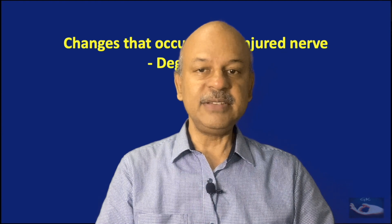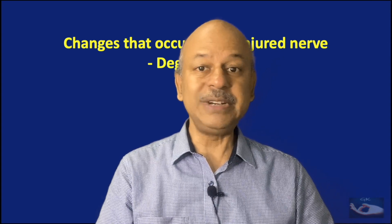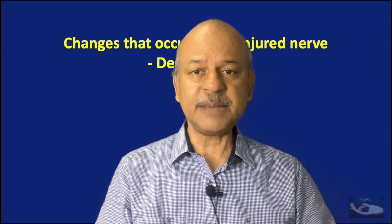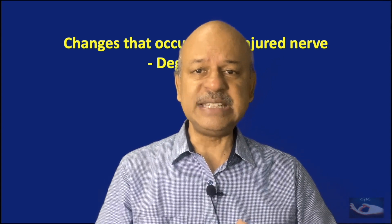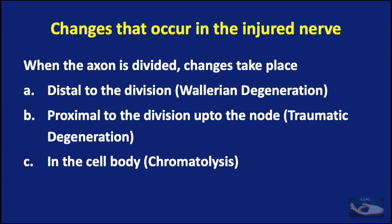When a nerve is injured, it undergoes a process of degeneration. We shall now see the changes that occur in the injured nerve — the process of degeneration. Once the axon is transected, degeneration of the nerve occurs. Changes take place at three different levels.